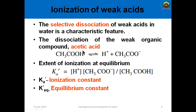For a weak acid such as acetic acid (CH3COOH), the dissociation gives CH3COO minus and H plus. The extent of ionization is expressed by the ionization equilibrium constant Ka, which equals the concentration of H plus multiplied by the concentration of CH3COO minus, divided by the concentration of CH3COOH. This is known as the ionization constant.